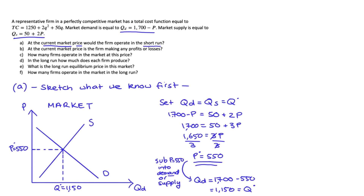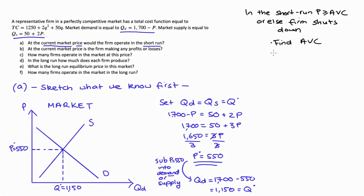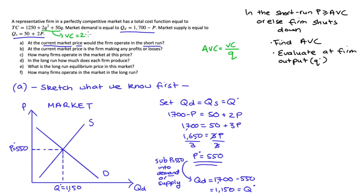Part A specifically asks whether the firm operates in the short run. The requirement is that price must be greater than or equal to average variable cost (AVC); otherwise the firm shuts down. To check this condition we need to find our AVC function. AVC equals variable cost divided by Q. Variable cost consists of those terms in the total cost function that include a quantity variable, so VC equals 2Q squared plus 50Q. Therefore AVC equals (2Q squared plus 50Q) over Q, which simplifies to 2Q plus 50.